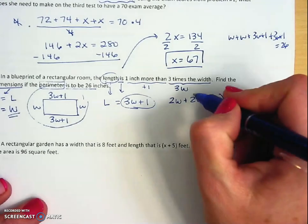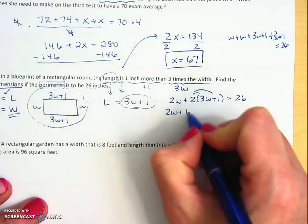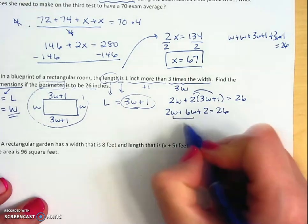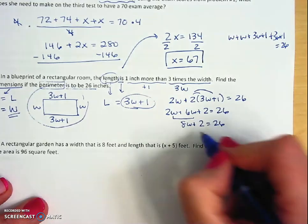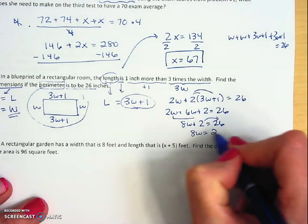So here I'm going to distribute this 2, and now I have 2w plus 6w plus 2 equals 26. Combining like terms gives me 8w plus 2 equals 26. Subtracting 2 from both sides gives me 8w equals 24.